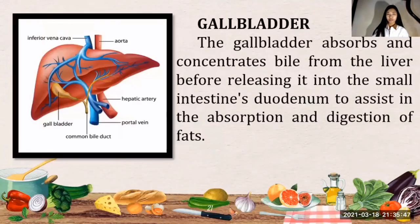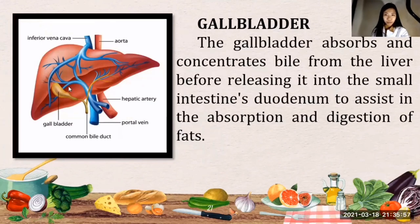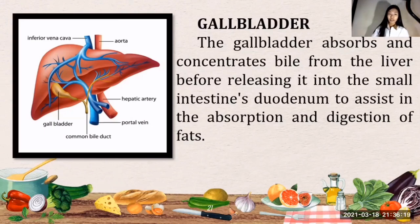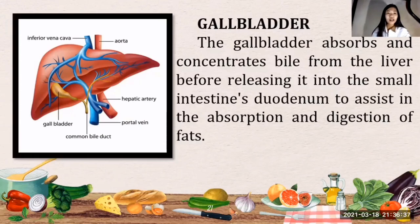The next part is the gallbladder — a small pouch that sits just under the liver. The gallbladder absorbs and concentrates bile from the liver before releasing it into the first portion of the small intestine, the duodenum, which is involved in the absorption and digestion of fats. The main function of the gallbladder is to store bile produced by the liver. After meals, the gallbladder is empty and flat like a deflated balloon, but before a meal it may be full of bile and about the size of a small pear.